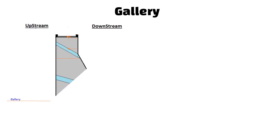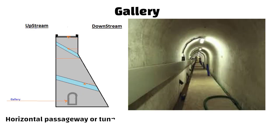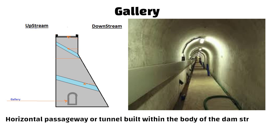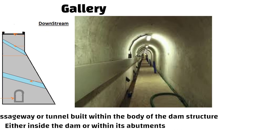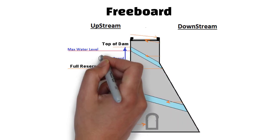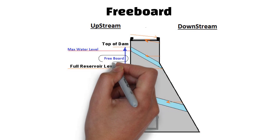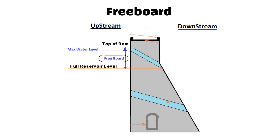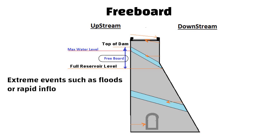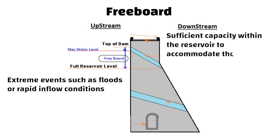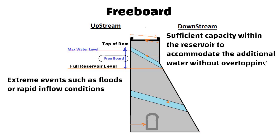Gallery. A gallery in a dam is a horizontal passageway or tunnel built within the body of the dam structure. It is usually located either inside the dam or within its abutments. Freeboard. The term freeboard refers to the vertical distance between the full reservoir level and the top of the dam structure. It ensures that even during extreme events such as floods or rapid inflow conditions, there is sufficient capacity within the reservoir to accommodate the additional water without overtopping the dam.